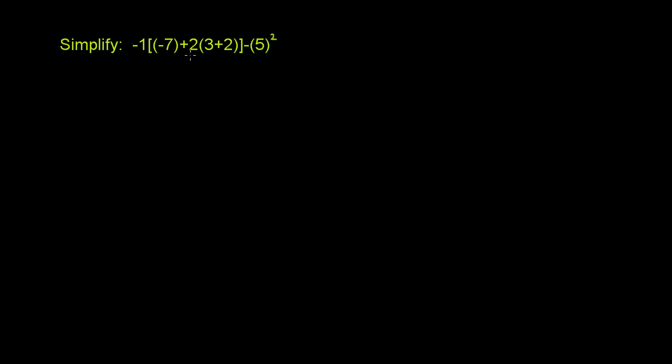Simplify: Negative 1 times this expression in brackets. Negative 7 plus 2 times 3 plus 2 minus 5 in parentheses squared. So this is an order of operations problem.